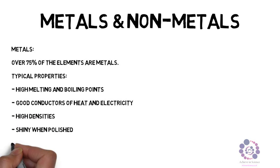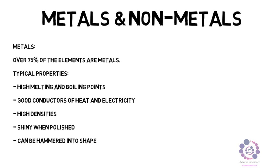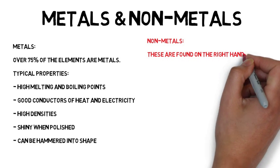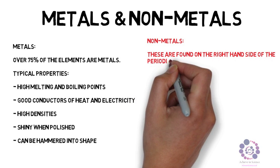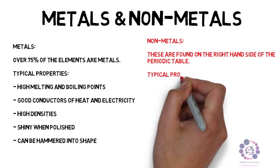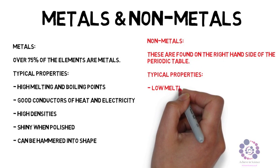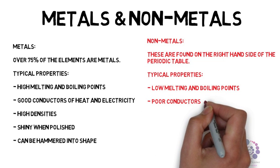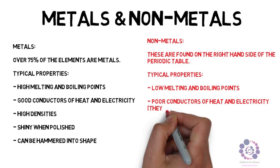On the other hand, non-metals. These are found on the right hand side of the periodic table and tend to have the typical properties of having a low melting and boiling point. They tend to be poor conductors of heat and electricity. Instead, they are said to be good insulators. They have low densities, they are brittle, and they are also dull in their appearance.